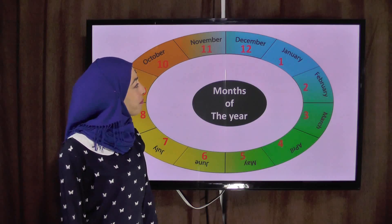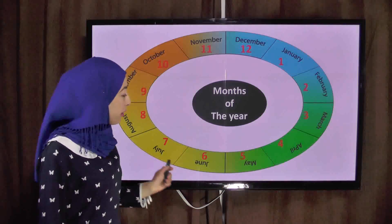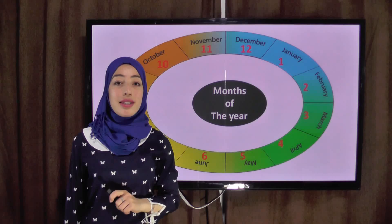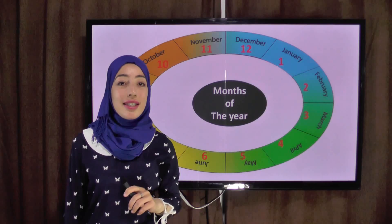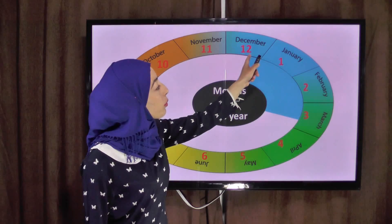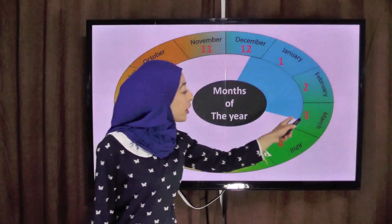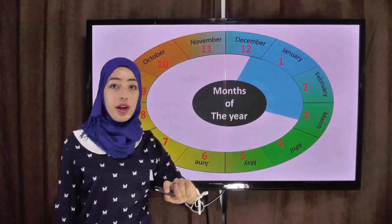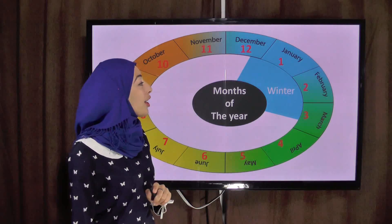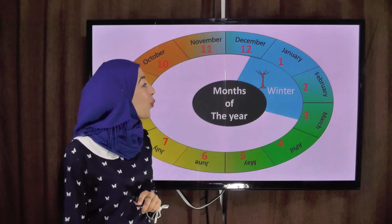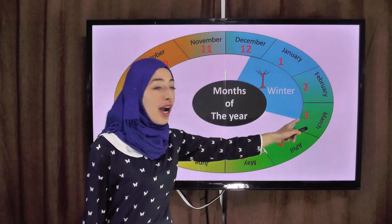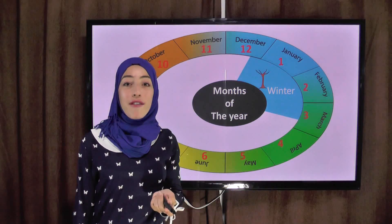Now we have discovered the months. Let's see the seasons — fusool s-sana — seasons. From the twenty-first of December to the twenty-first of March, which season is this? We call it winter. Winter — الشتاء.